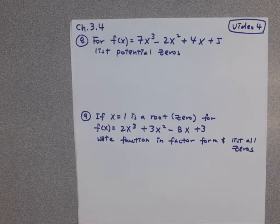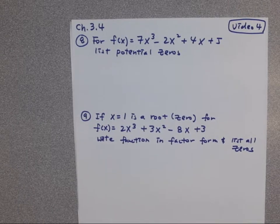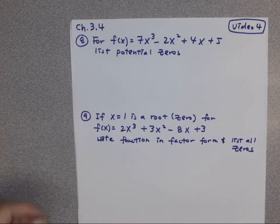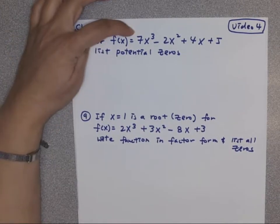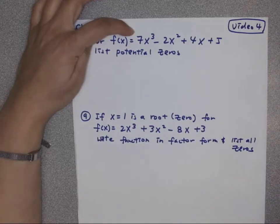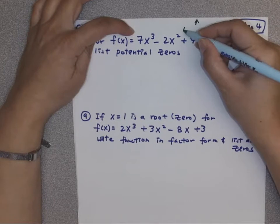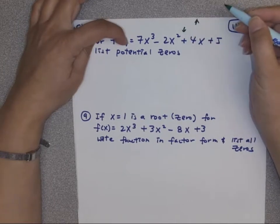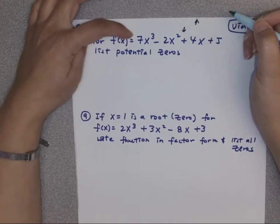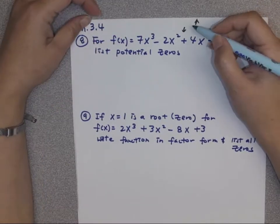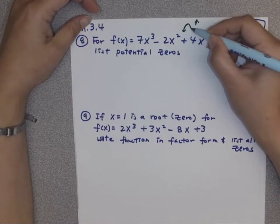The first one, we will look at this degree 3 function and we want to list potential zeros. So you know this is degree 3, a positive. So hopefully you know the end behavior is like one side up, one side down with a positive. It's going to be y side up, left side down. And then degree 3 means maximum turn would be 2 like that.